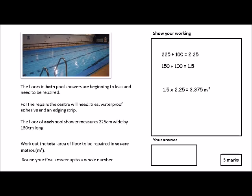We're at three marks already. The question says 'work out the total area of floor' — we've only worked out the area of one shower, so now we times it by two to get the area of both showers. This is why the question painstakingly highlighted 'each,' 'both,' and 'total' — just to remind you there are two showers. So the total area is 3.375 meters squared times two, which is 6.75 meters squared.